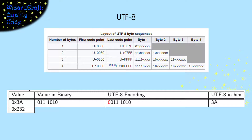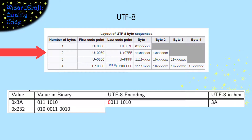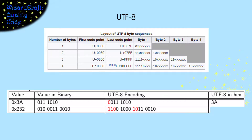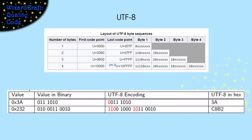For our second example, let's look at how UTF-8 would encode the hex value 232. Because that value is between 80 and 7FF, we're going to use row 2 of the UTF-8 table. That row of the table is encoding things that are bigger than 7 bits and less than or equal to 11 bits. So 232 is going to get encoded as 11 bits. When we turn it into UTF-8, the first byte is going to start with 110 and have the first 5 bits of the value. So 232 in hex is going to get UTF-8 encoded into C8B2.